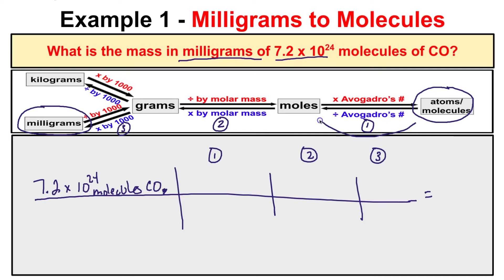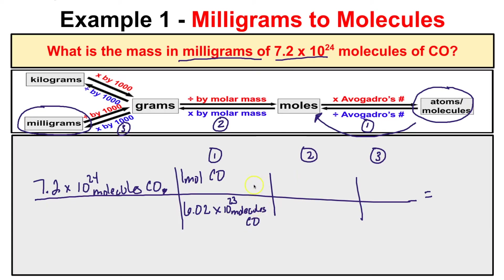We have 7.2 times 10 to the 24th molecules of carbon monoxide, and the very first thing we want to do is convert this to moles of carbon monoxide. We know that one mole of carbon monoxide contains 6.02 times 10 to the 23rd molecules of carbon monoxide — the word mole means 6.02 times 10 to the 23rd. That will bring us to moles, but we still want to figure out how many grams this is.